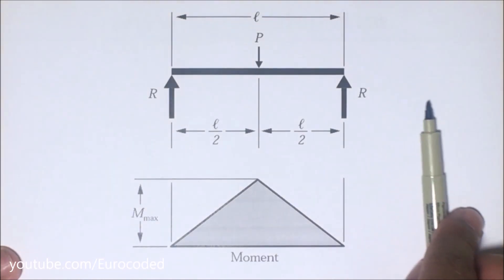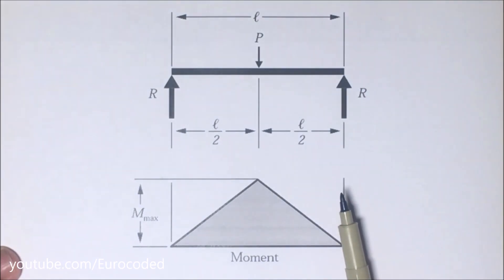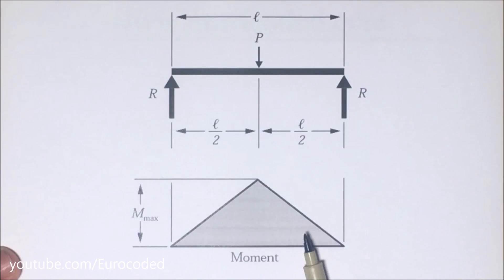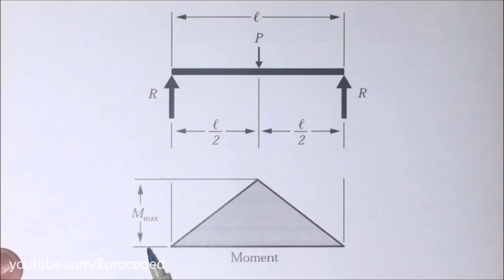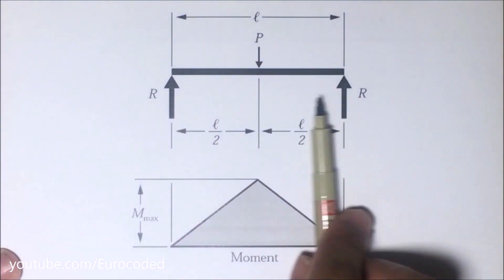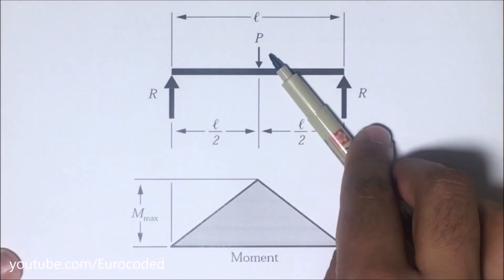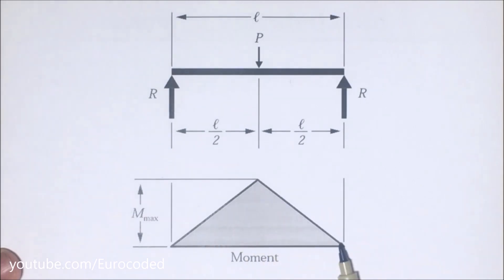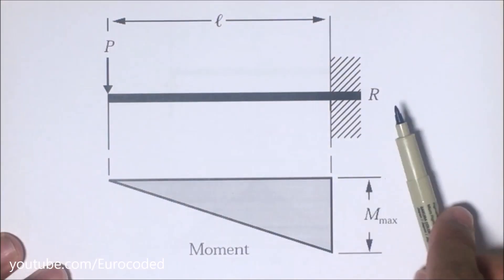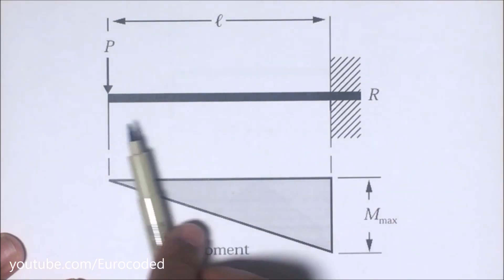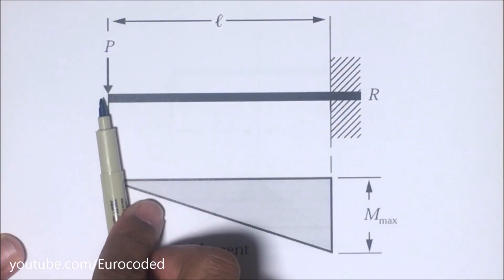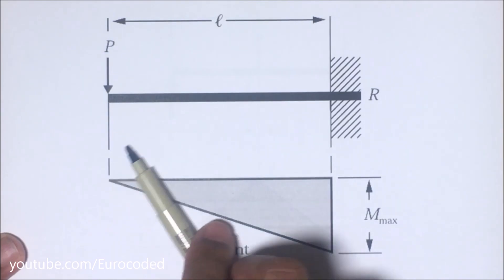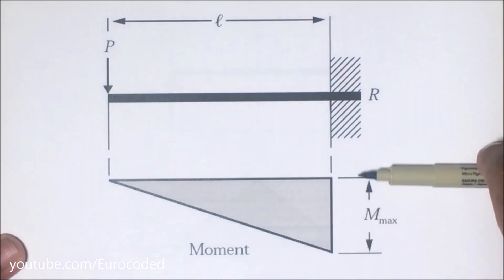I will add a YouTube card here and a link in the description below to a video where I explain the typical sign convention in more detail. When you draw bending moment diagrams, you will draw sagging bending moments above the x-axis and hogging bending moments below the x-axis. For example, a simply supported beam with a point load in the middle results in a sagging bending moment, drawn above the x-axis. A fixed-end cantilever beam with a point load at the end results in a hogging bending moment, drawn below the x-axis.